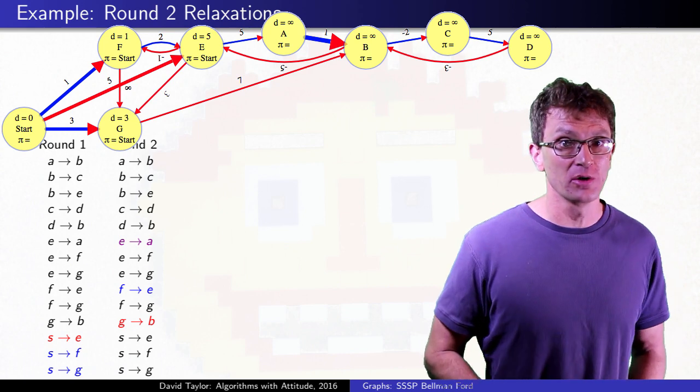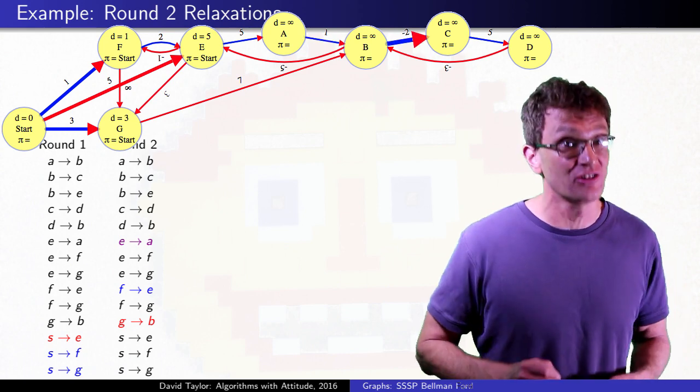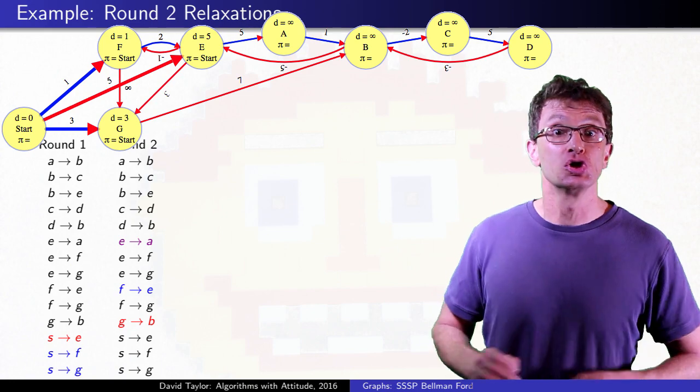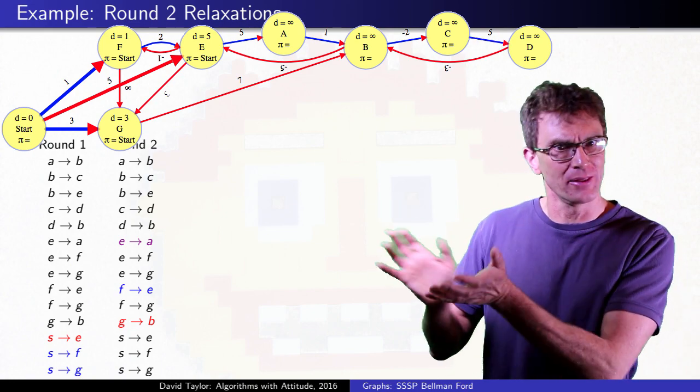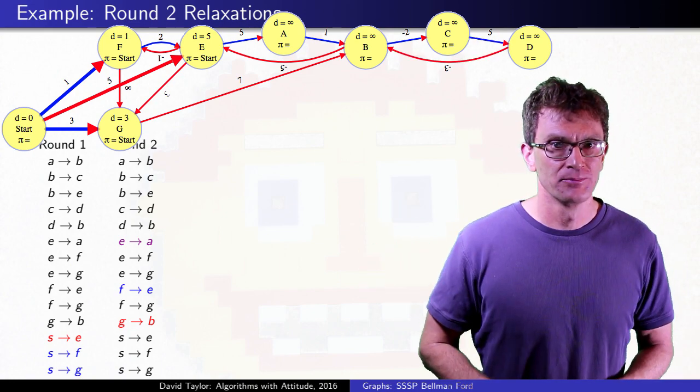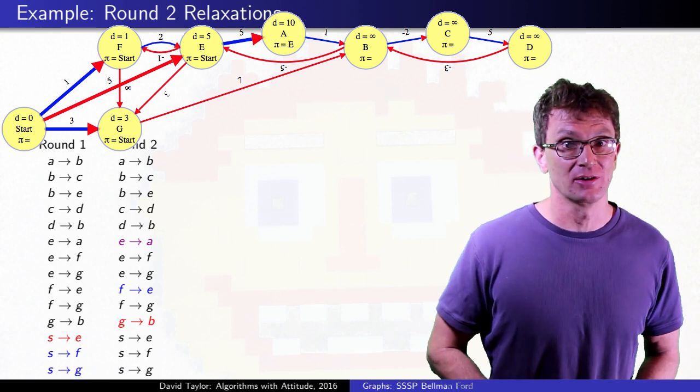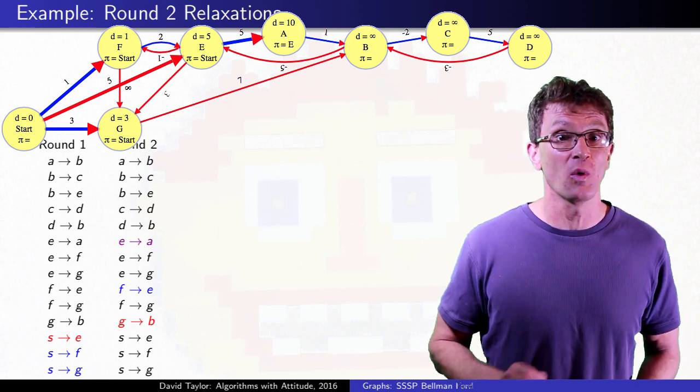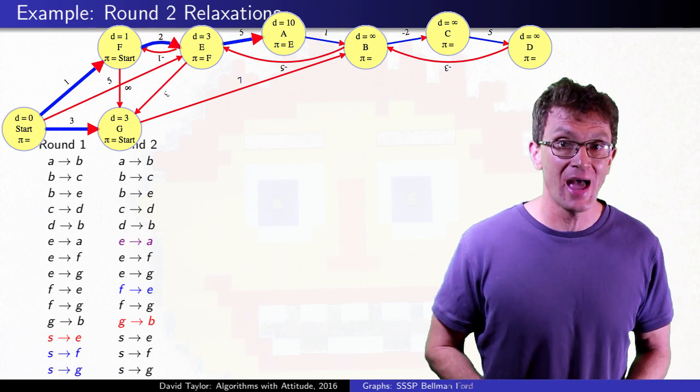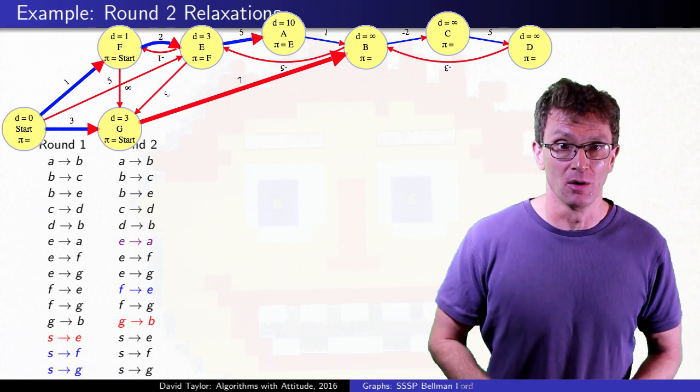In the next round, notice that the E to A edge successfully changes a value, propagating too large a shortest path estimate to A. That edge is on the final tree, but the distance isn't correct yet, because E's distance wasn't correct when the relaxation happened. So I'll color that purple in the list below.